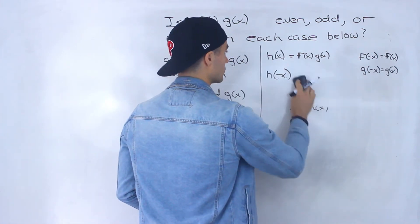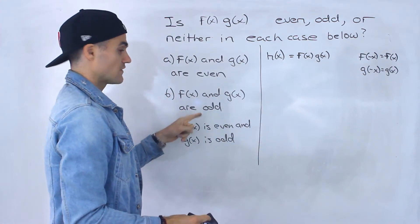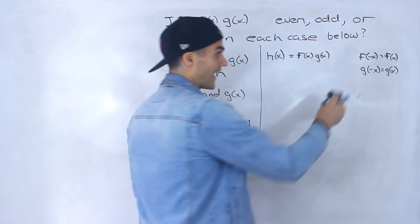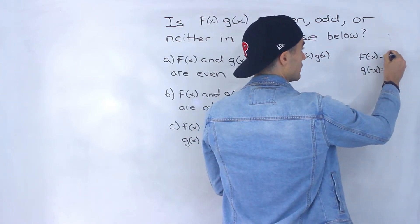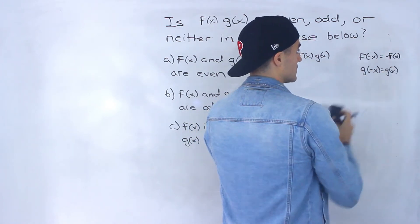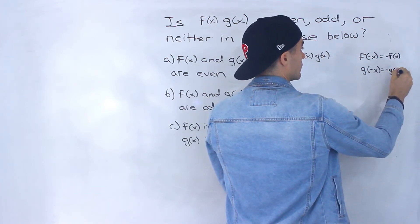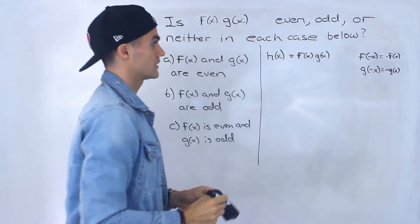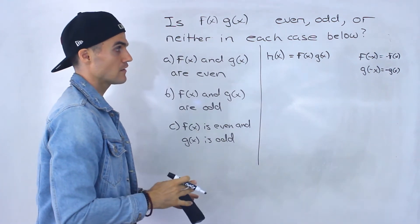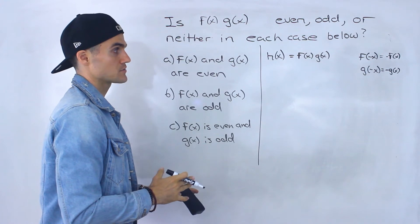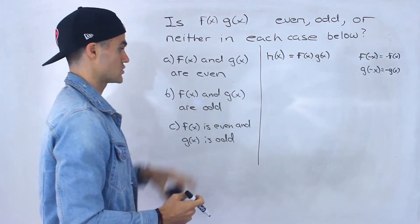Moving to part b — f(x) and g(x) are both odd. If both are odd, that means f(-x) = -f(x) and g(-x) = -g(x). So both f and g have that property when they're odd.